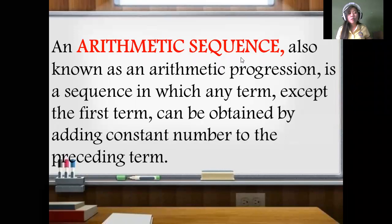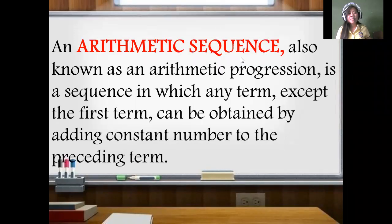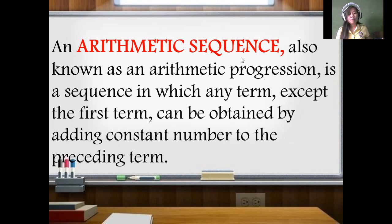An arithmetic sequence, also known as an arithmetic progression, is a sequence in which any term except the first term can be obtained by adding a constant number to the preceding term. When we say constant number, it is a real number — it can be negative, it can be positive, and it can also be fractions or irrational numbers.